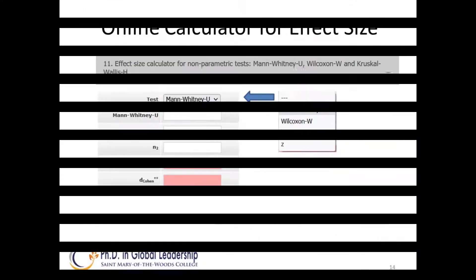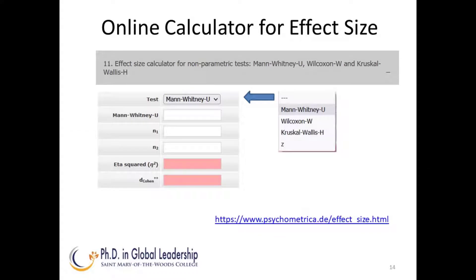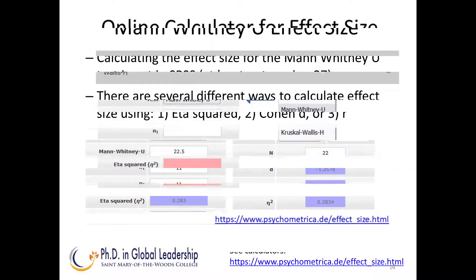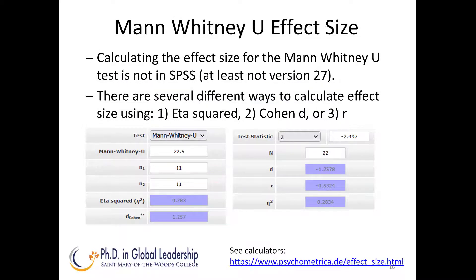Unfortunately, SPSS version 27 does not have an effect size calculation for the Mann-Whitney-U test. I did find a Mann-Whitney-U online calculator at Psychometrica. As you can see here, this calculator also works for two other nonparametric tests. It also has an effect size for the Z test statistic. I show this because the Mann-Whitney shows eta squared and Cohen's D, but not R. And a lot of examples have you work with R for the effect size for Mann-Whitney-U tests. So let's look at these two effect size calculators.